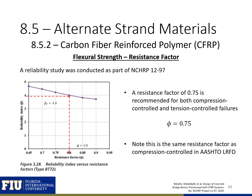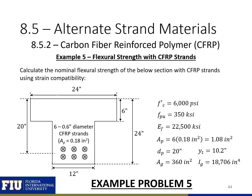Finally, a reliability study conducted as part of this NCHRP project recommends a resistance factor of 0.75 for both compression-controlled and tension-controlled failures with CFRP. You can now pause this video and go to the accompanying video for example problem 5, where we calculate the flexural strength of a section with CFRP strands.